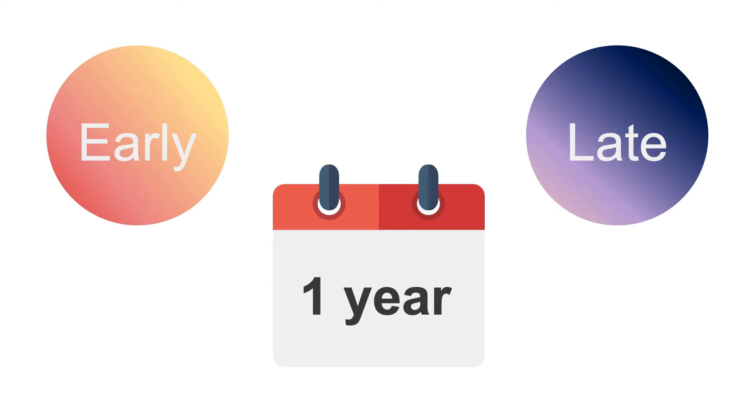The cutoff point between early and late PVE is one year, because of significant differences in the microbiology observed within the first year compared with after the first year. Prostheses made from metal or carbon prevent the adherence of microorganisms, so infections in these valves generally originate from the sewing ring or thrombi located near the sewing ring.